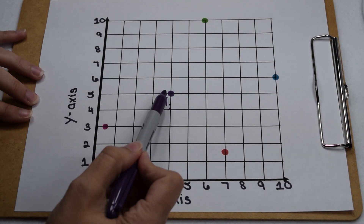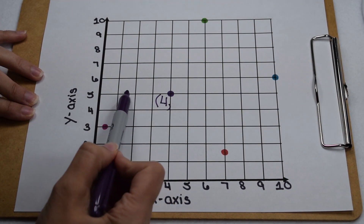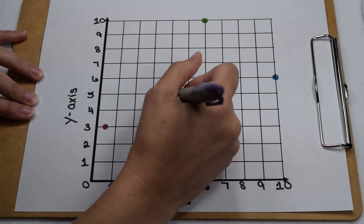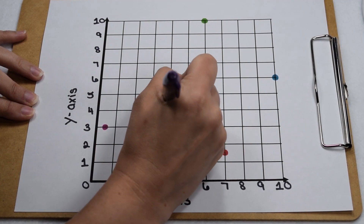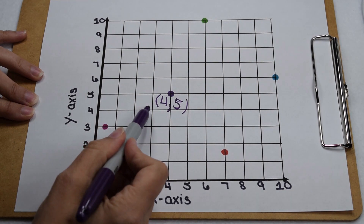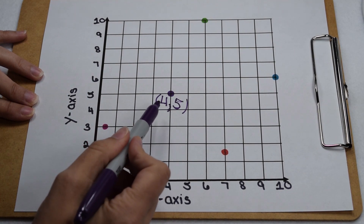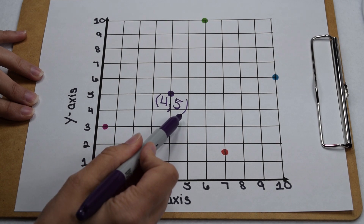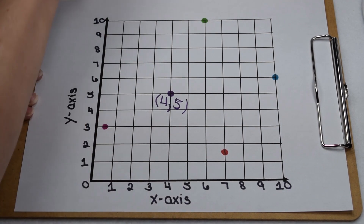We then check to see where it lines up on our y-axis. This point lines up with the 5 on our y-axis, so its y-coordinate is going to be represented with a 5. This point is going to be represented by the ordered pair (4, 5). Remember, ordered pairs are always inside a set of parentheses with a comma separating the x and y values.